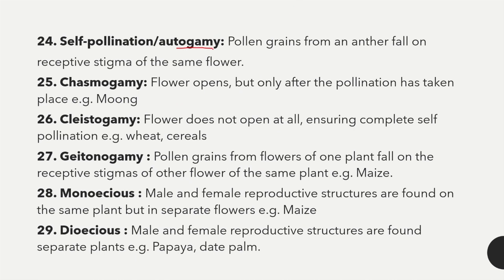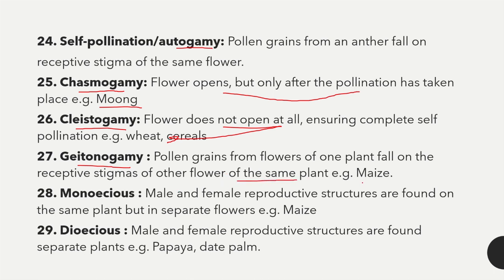Chasmogamy refers to flowers that open but only after pollination takes place, for example in Moong. In some plants the flowers do not open at all, ensuring complete self-pollination, for example in wheat and cereals. Geitonogamy refers to pollen grains from flowers of one plant falling on the receptive stigma of other flowers of the same plant, for example in maize.